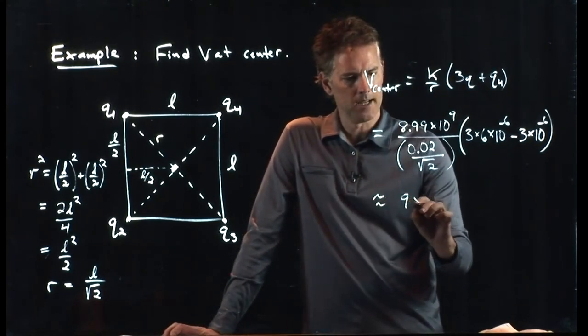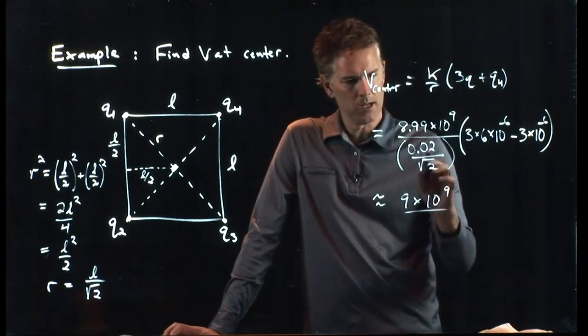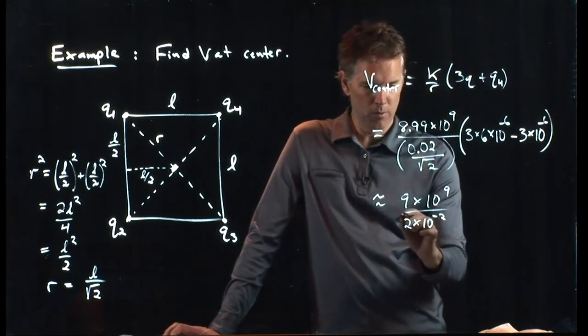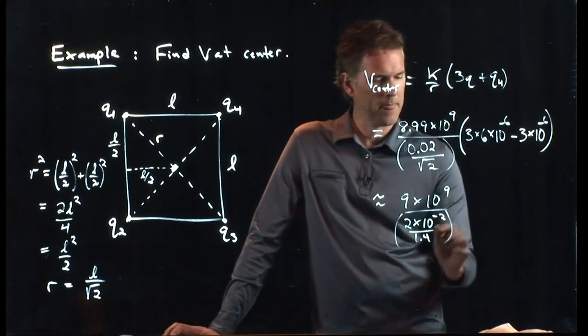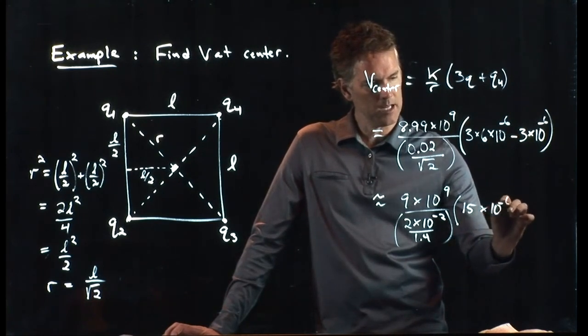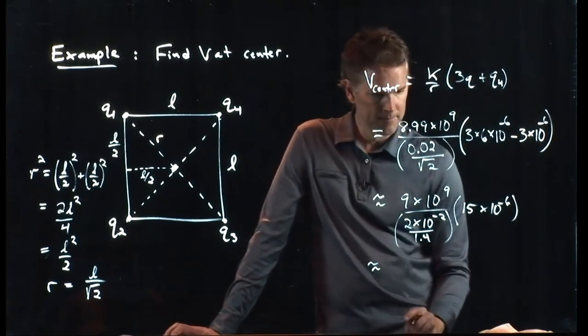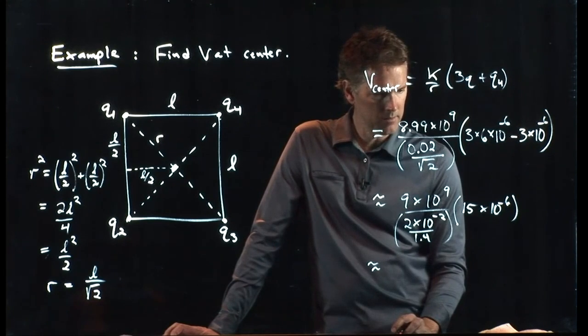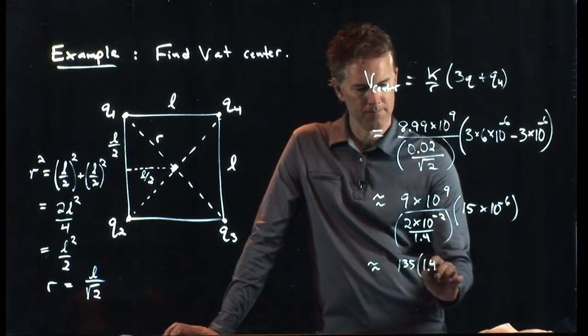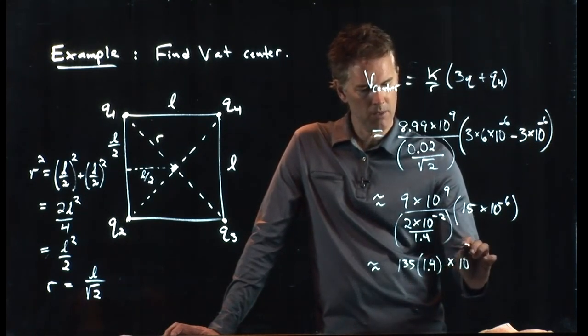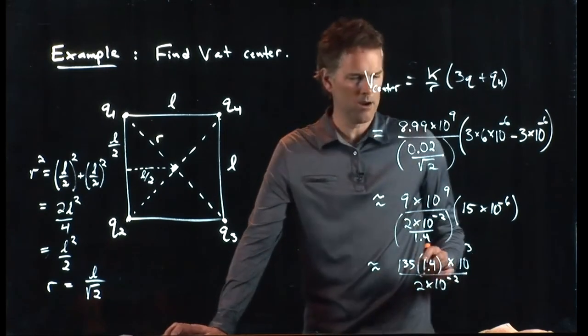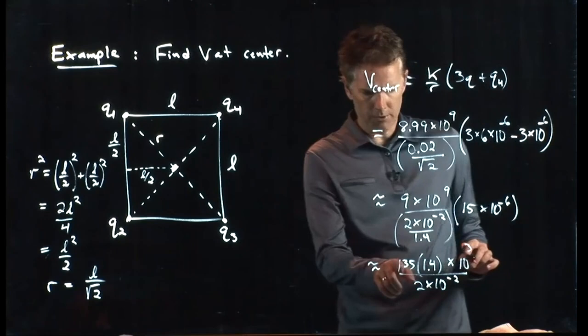So we've got 9 times 10 to the 9. We've got a 2 times 10 to the minus 2, root 2. Root 2 is about 1.4. And then we have 18 minus 3 is 15 times 10 to the minus 6. Let's see what we get. We get 9 times 15 is 135. That 1.4 is going to come up top. We've got a times 10 to the 3 up top, and then we still have that 2 times 10 to the minus 2 down there. 135 times 1.4, that's got to be about 200, and 200 divided by 2 is 100.